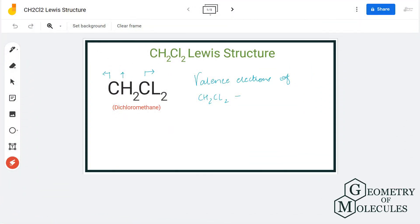Hi guys, today in this video we are going to look at the Lewis structure for CH2Cl2, which is the chemical formula for dichloromethane. To understand its Lewis structure, we will first go through its total number of valence electrons.